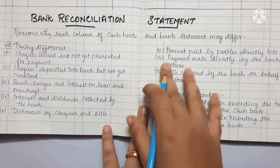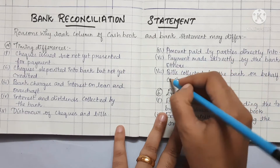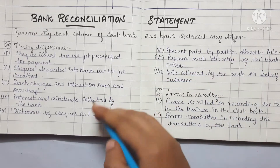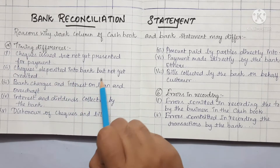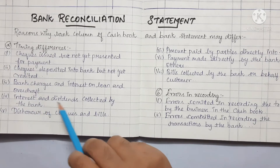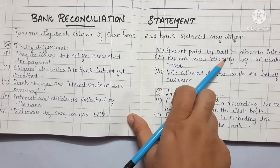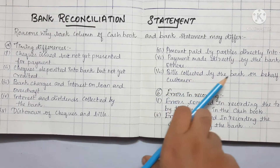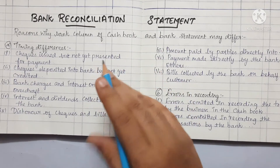First, we will look at the importance. In this concept of time difference, we have 8 points. First, what is the check issued but not yet presented for payment? Check deposited into bank but not yet credited. Bank charges and interest on loan and overdraft. Interest and dividend collected by bank. Dishonor of checks and bills. Amount paid by parties directly into bank. Payment made directly by bank to others.